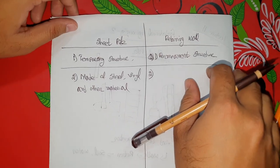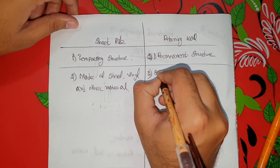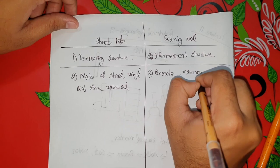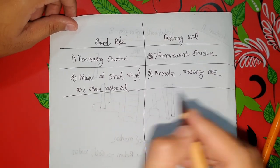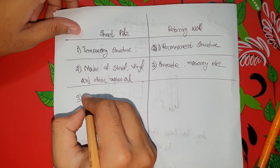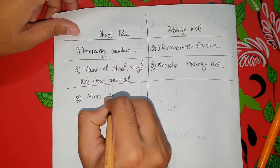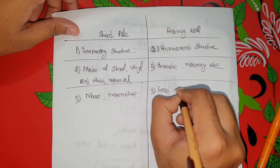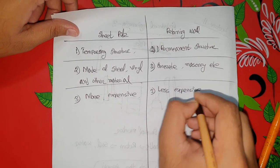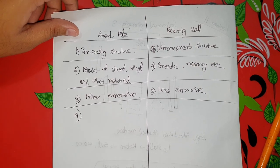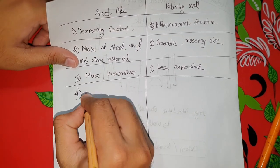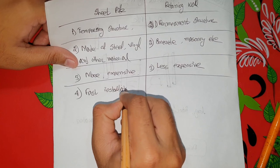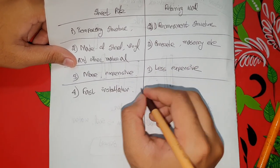Now it is made of concrete or earth. The retaining wall is more expensive, while the sheet pile is a little less expensive. The retaining wall is also slower to install than the sheet pile.